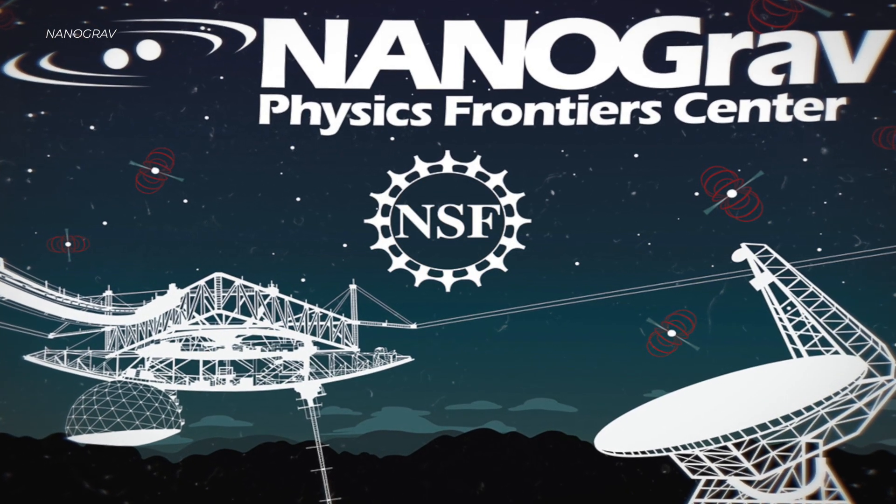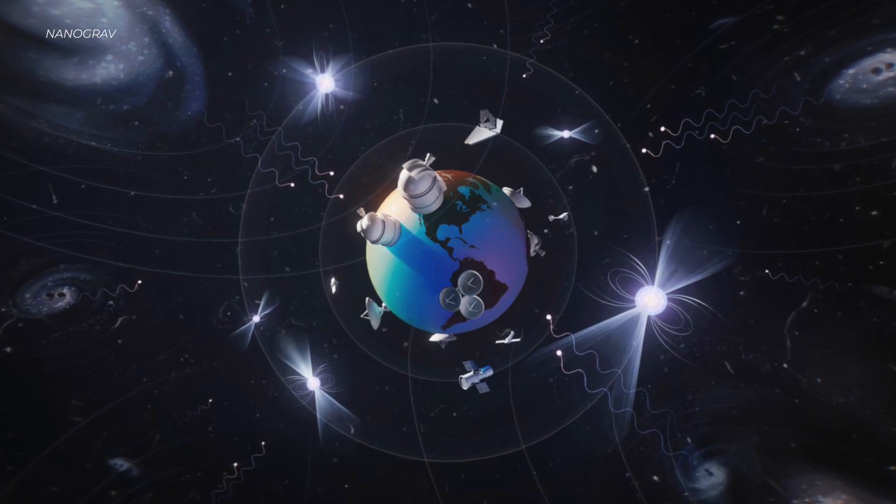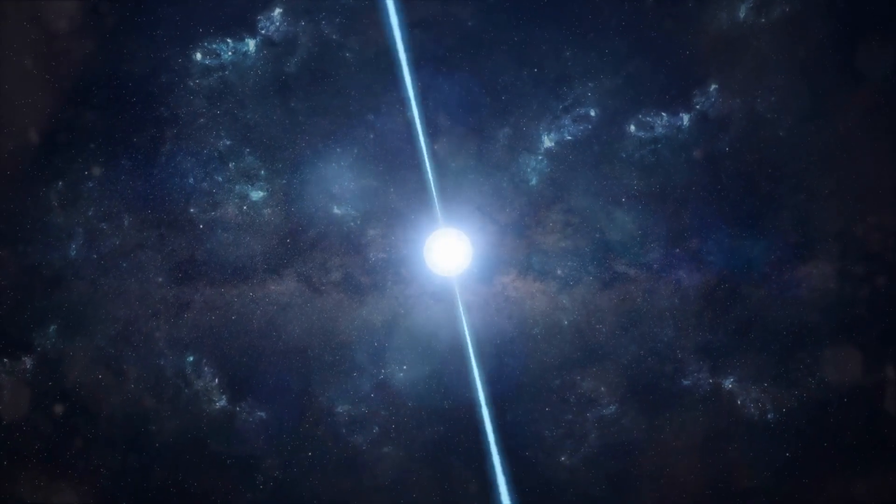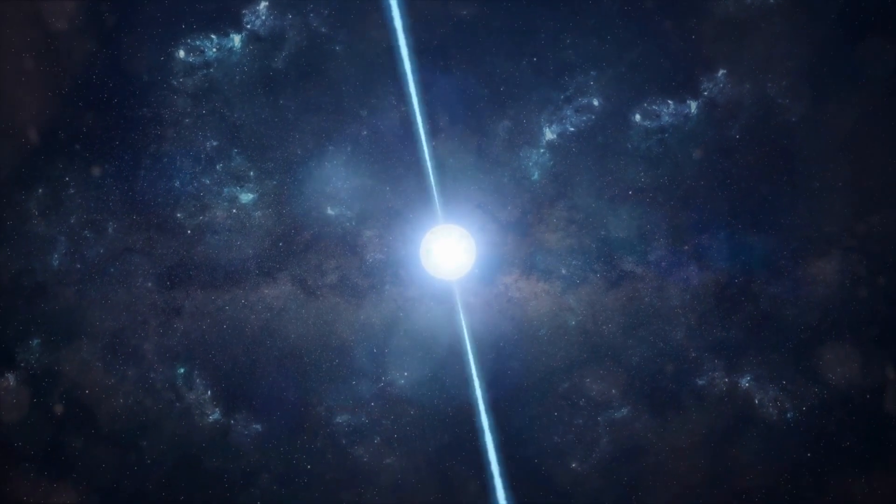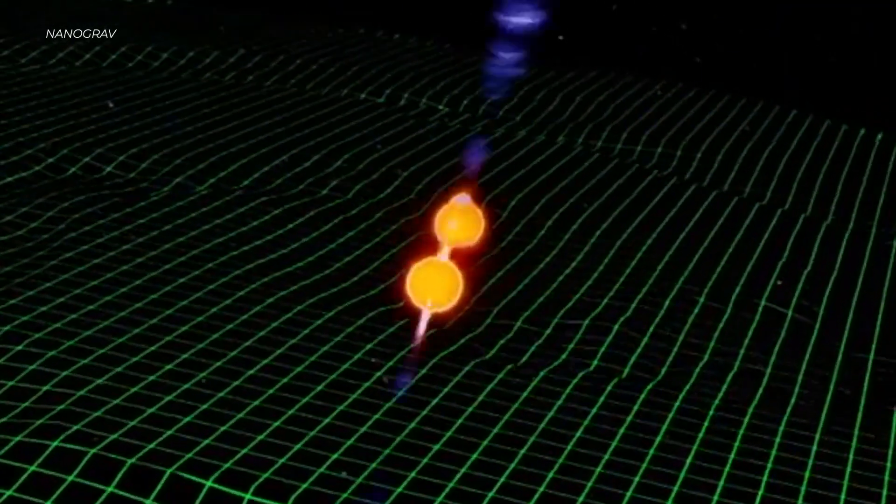So on June 29th, the NANOGrav collaboration, made up of astrophysicists from around the globe, announced their groundbreaking discovery. They used an array of millisecond pulsars, the leftovers of dead stars that spin hundreds of times per second, to detect the gravitational wave background.